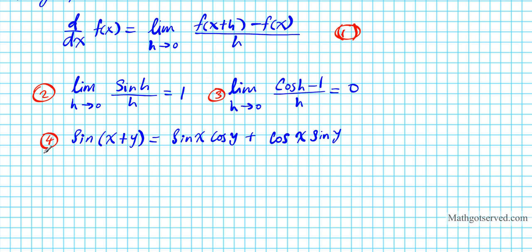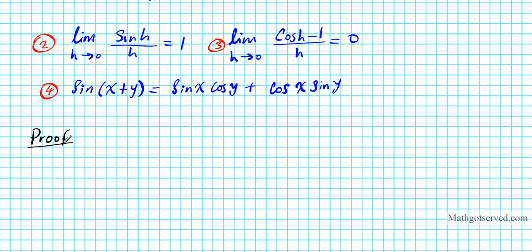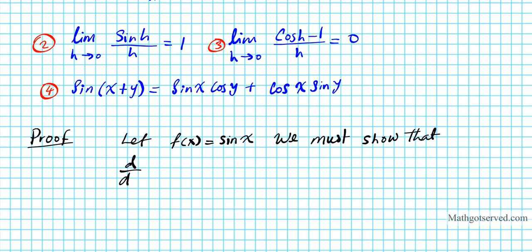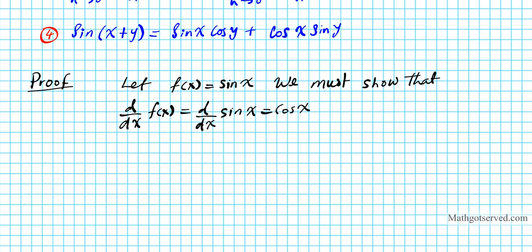Now let's go ahead and start on the proof. We're going to let f(x) equal sine x, and we're going to show that the derivative of f(x) — which is basically the derivative of sine x — equals cosine x. This is the whole objective of our proof.